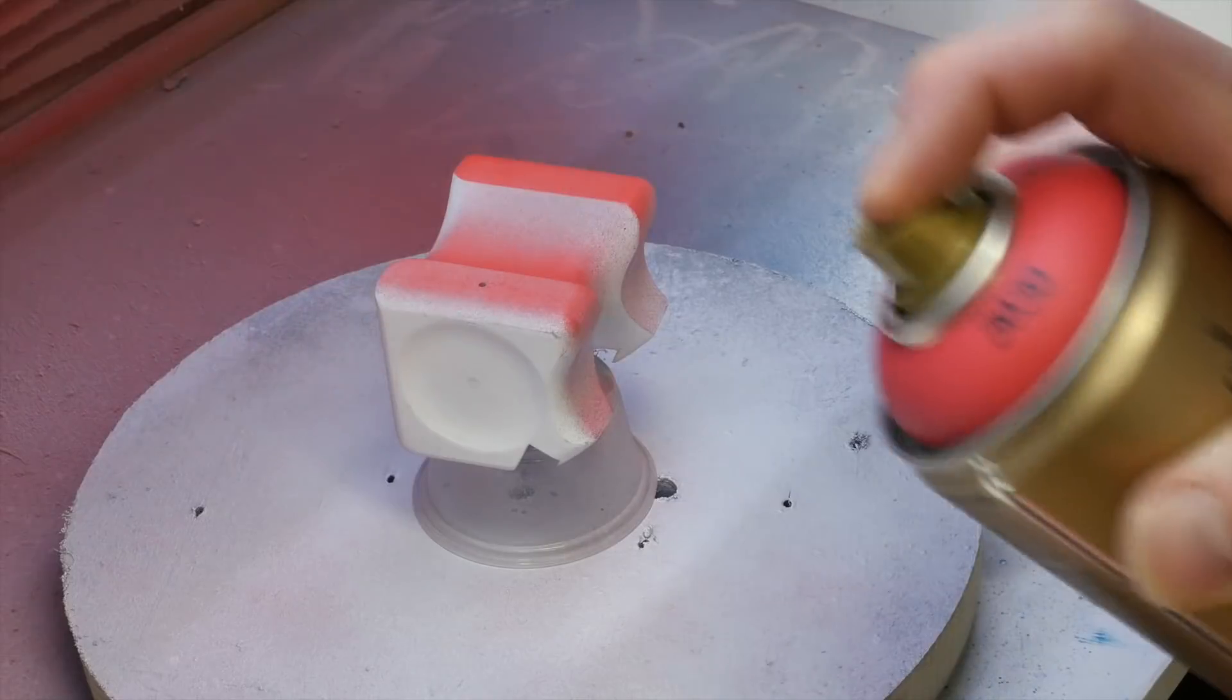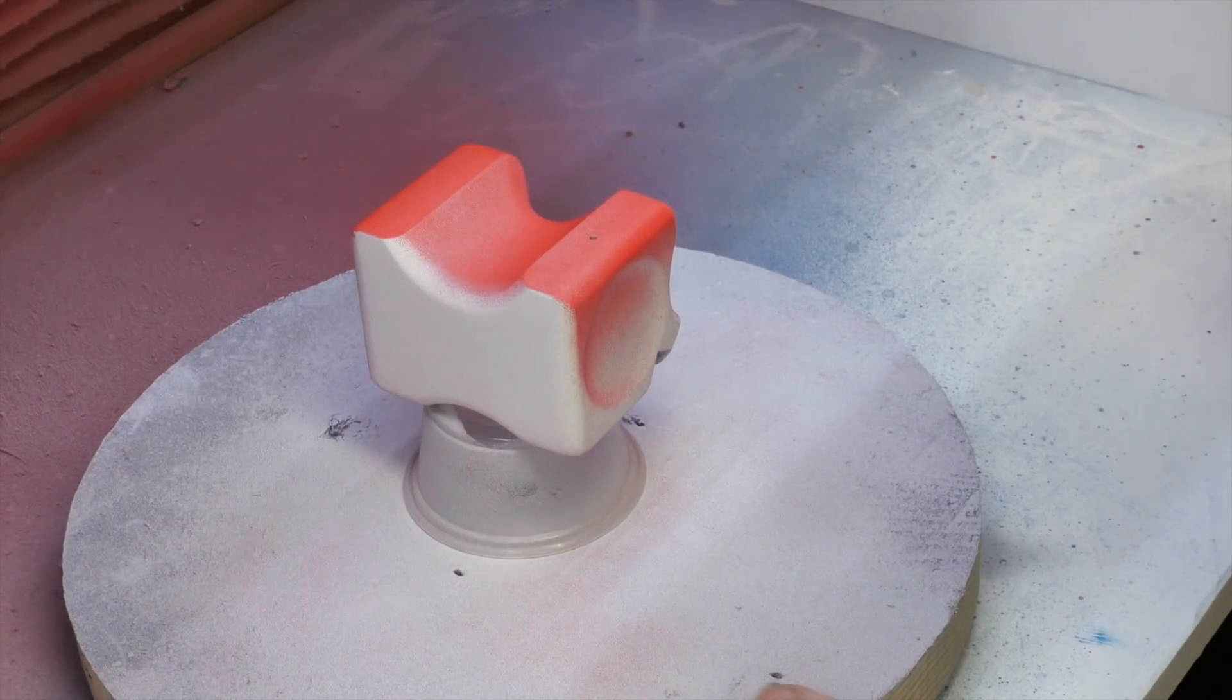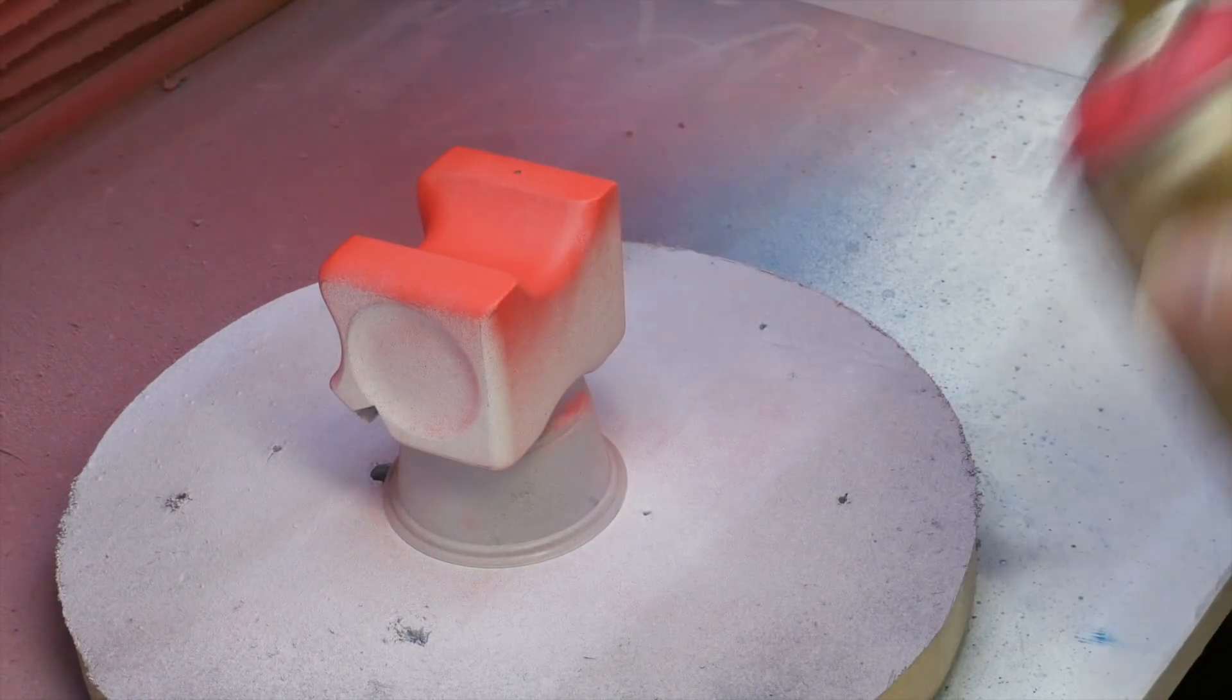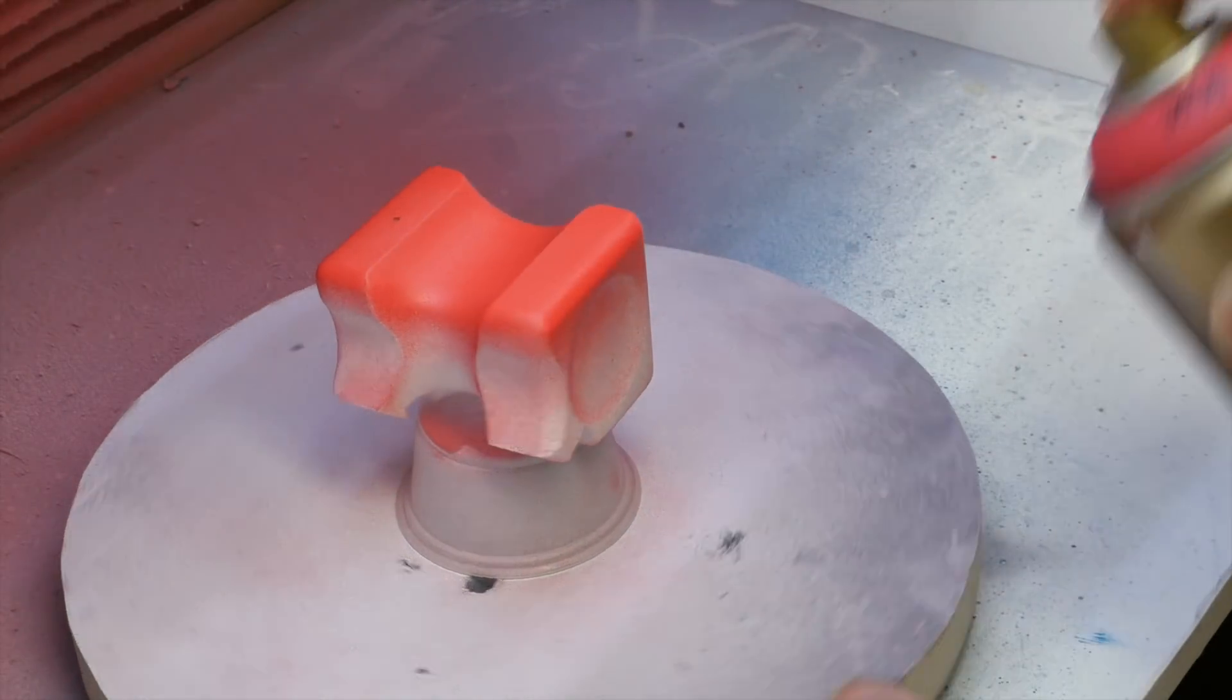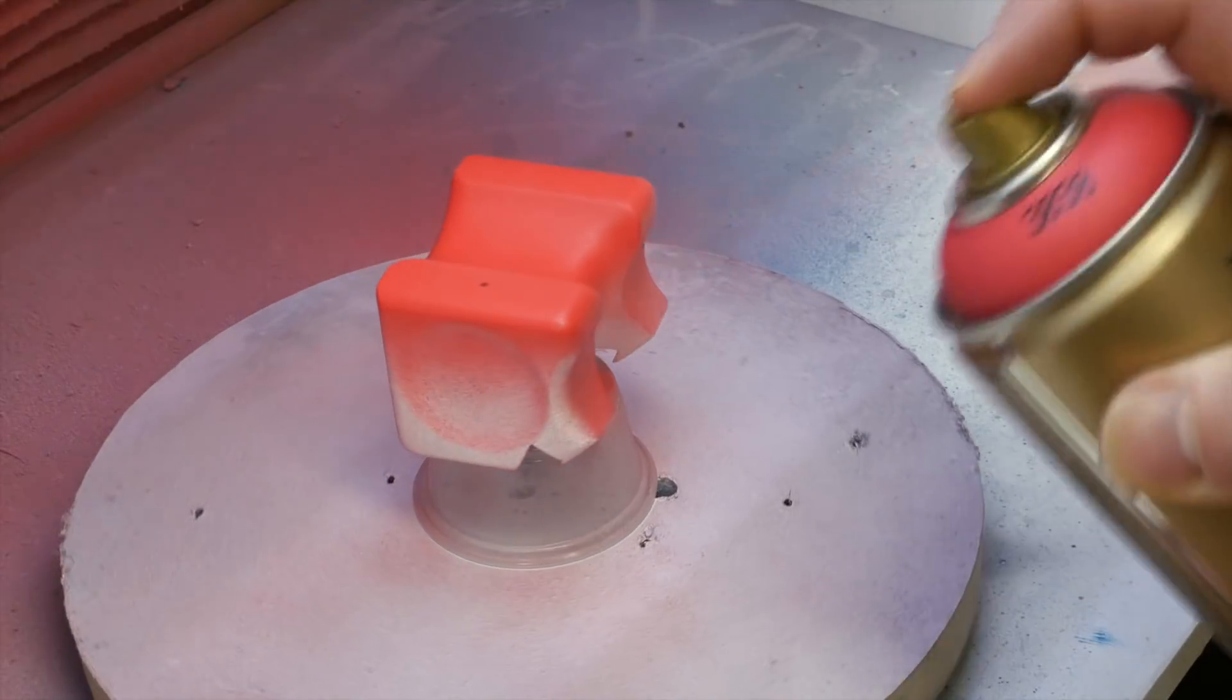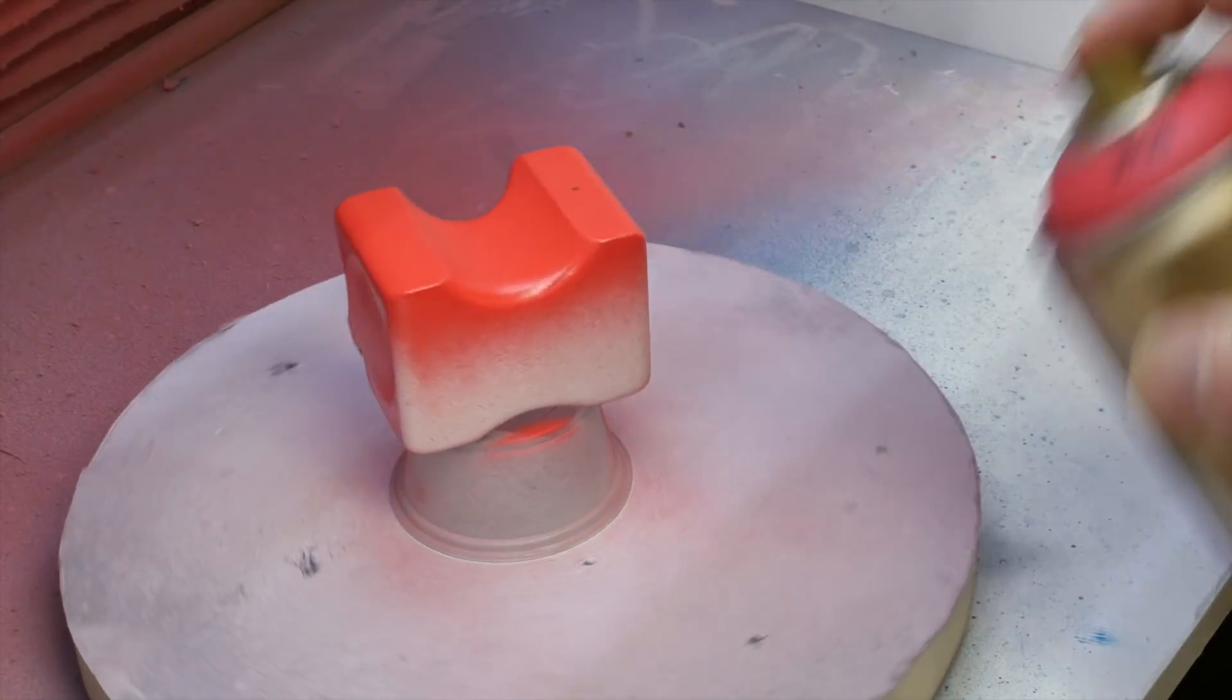So I apply, again, light coats of my paint. Here I'm using a Montana raspberry, very light coats. I'm building up the color as I go. I'm doing the bottom first, and you'll notice I had a hole in there before. I want to flip the part around. Again, light little coats. I'm only spraying when the can is parallel to the parts.